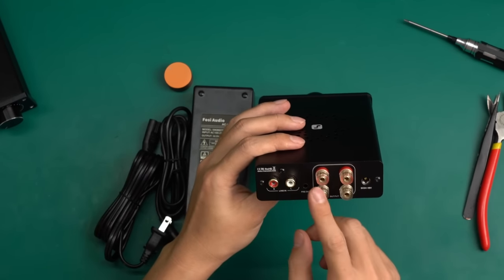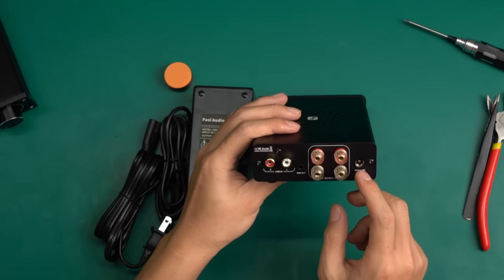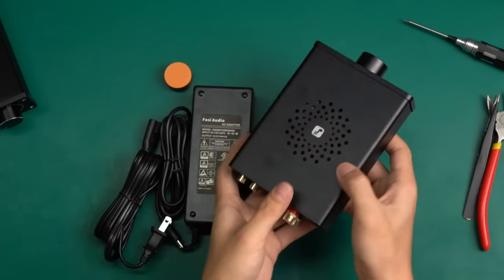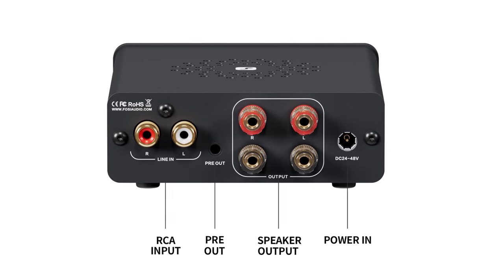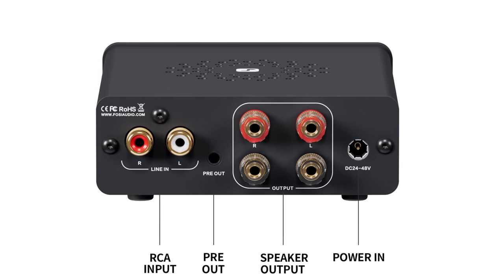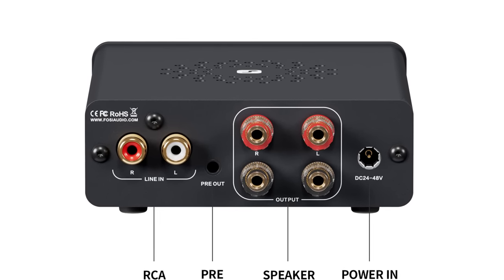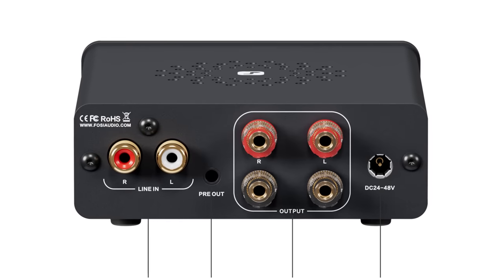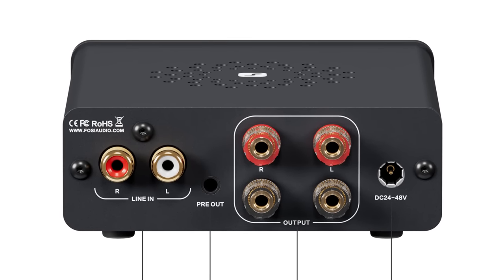On the rear panel are the input and output interfaces, including the power socket. It supports a set of RCA inputs, a set of speaker outputs, and has a pre-out port. The power socket indicates that this amplifier supports a power supply from 24V to 48V.